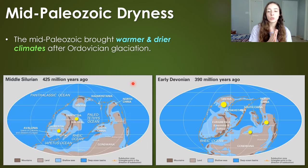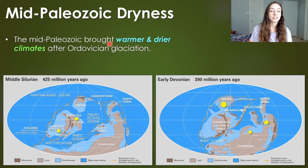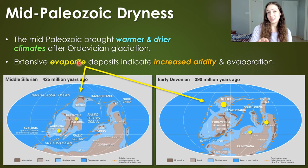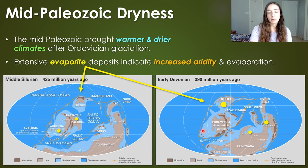In terms of climate, there were much warmer and drier conditions than what we had ended with in the Ordovician, when glaciation caused a mass extinction. In the Silurian and Devonian, we see extensive evaporite deposits — salts left behind by evaporating water that becomes supersaturated, leaving behind deposits like halite, gypsum, and sylvite. These evaporite deposits indicate increased aridity and evaporation, and sea level rise with transgression of epicontinental seas onto land masses also represented warming.